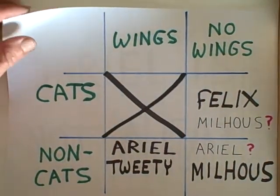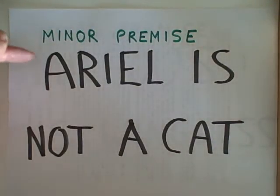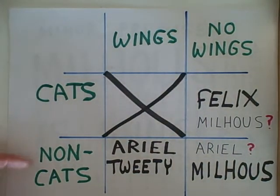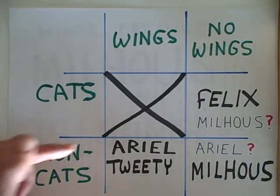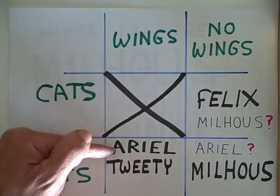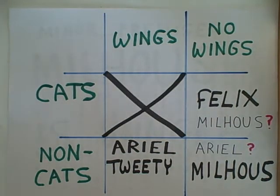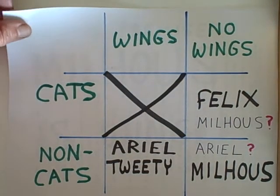Now let's take a look at some minor premises that do not yield valid conclusions. Ariel is not a cat. Ariel must therefore be in the bottom row of non-cats, but we don't know where to put Ariel in this row. Is Ariel an angel who has wings, or is Ariel a mermaid who has no wings? All we know about Ariel is that she is not a cat.